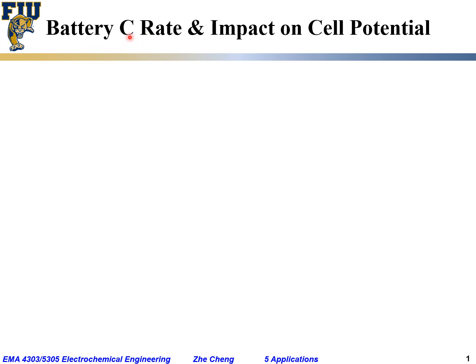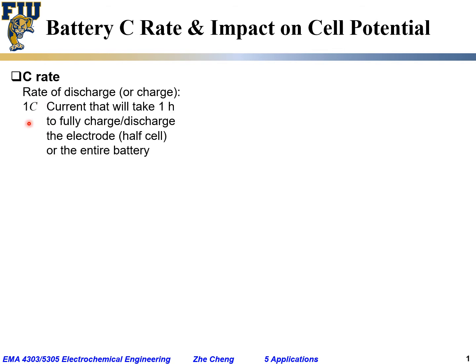Another important concept that people quite often come across, especially for secondary or rechargeable batteries, is the so-called C-rate. It also has an impact on cell potential and capacity. C-rate is essentially the rate of discharge or charge — it corresponds to the current level to discharge or charge a battery. For example, 1C means the current level that will take one hour to fully discharge or charge the electrode or half-cell of the entire battery.